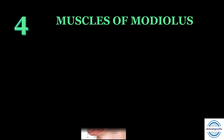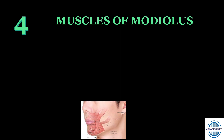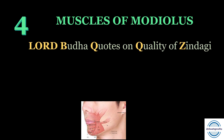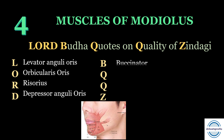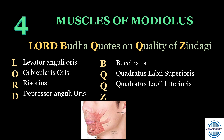The next mnemonic is for the muscles of modulus — very important. There are eight muscles which form the modulus and students often find it difficult to remember all eight. The mnemonic is: 'Lord Buddha quotes on quality of zendagi.' L for levator anguli oris, O for orbicularis oris, R for risorius, D for depressor anguli oris, B for buccinator, Q for quadratus labii superioris, another Q for quadratus labii inferioris, and Z for zygomaticus major — these are the eight muscles of modulus.